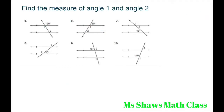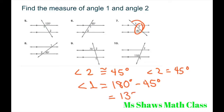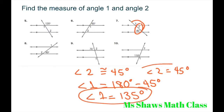For number 7, I'm going to use my alternate interior angle theorem. That means, since we have parallel lines, angle 2 is congruent to 45 degrees, so angle 2 equals 45 degrees. Now if angle 2 is 45 degrees, then I know these two angles are supplementary. So angle 1 equals 180 degrees minus 45, which equals 135 degrees. So angle 1 equals 135 degrees and angle 2 equals 45 degrees.